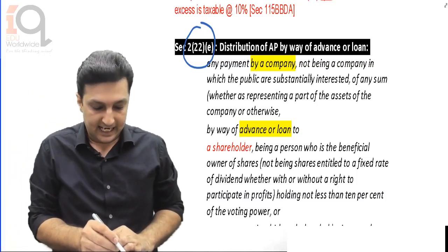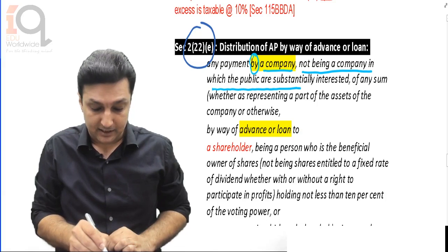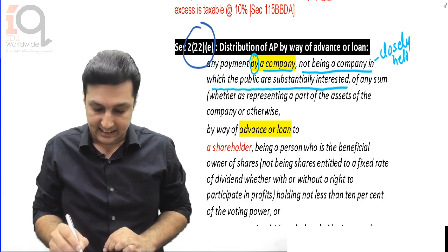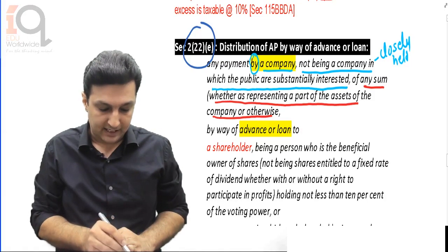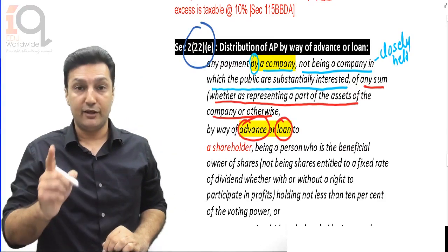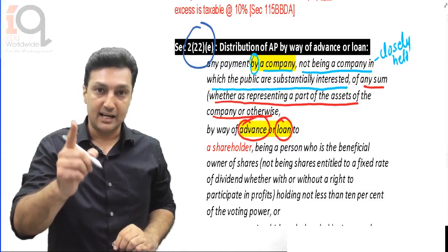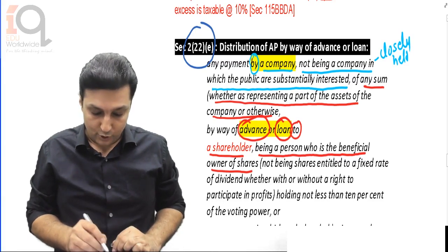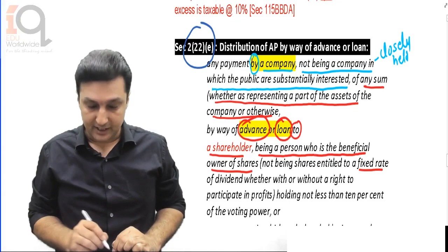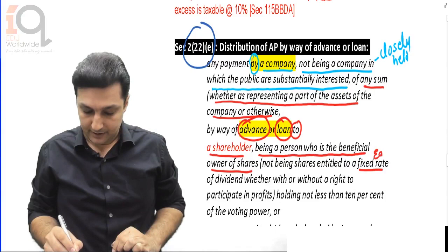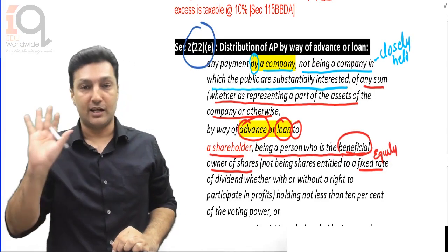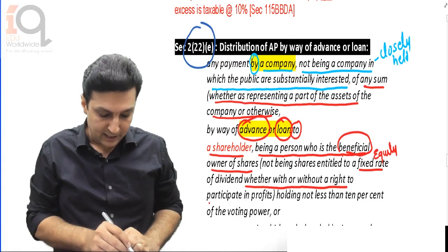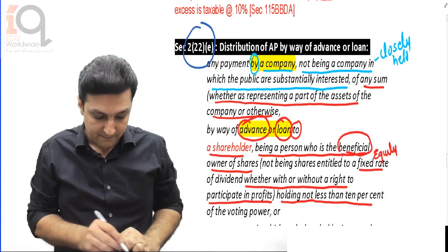And sadly that is where section 2(22)E comes in. Read it very carefully - this is exactly what the RTP question is based on. 'Any payment by a company not being a company in which public are substantially interested' - so we are talking about a closely held company - 'of any sum, whether as representing a part of the assets of the company or otherwise by way of advance or loan' - two words used: loan given or advance given - 'to a shareholder being a person who is the beneficial owner of shares, not being shares entitled to a fixed rate of dividend, whether with or without a right to participate in profits, holding not less than 10% of the voting power.'